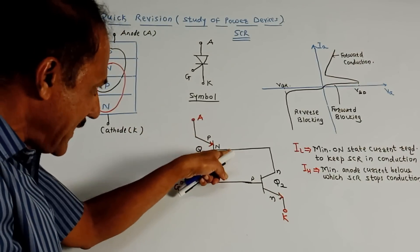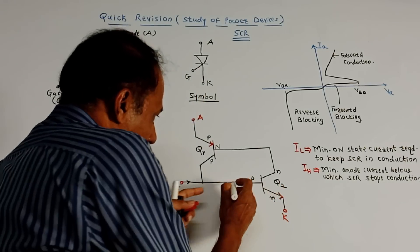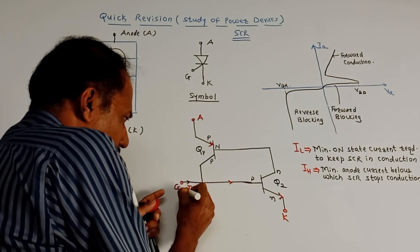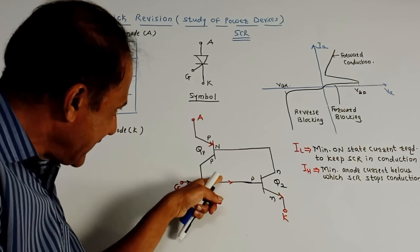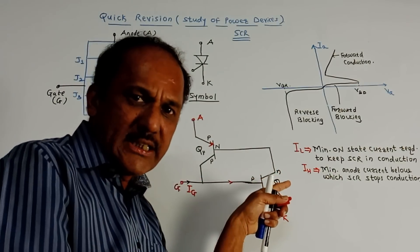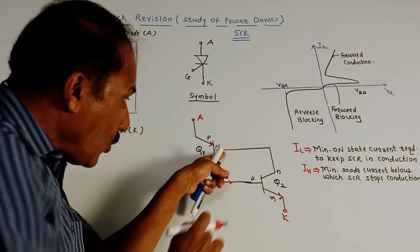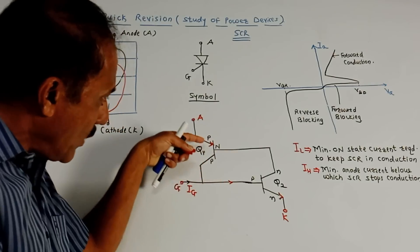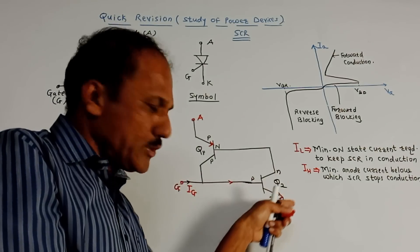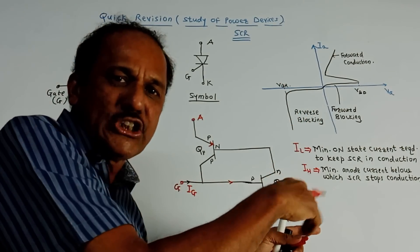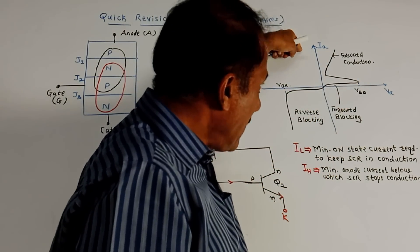The collector terminal of Q1 is connected to the base terminal of transistor Q2, along with the gate terminal which provides gate current IG. For a smaller amount of gate current, it gets added with the collector current from Q1. Since a transistor is an amplifier, Q2 amplifies the signal, producing more collector current. This is connected back to the base of Q1, generating positive feedback and amplification action.